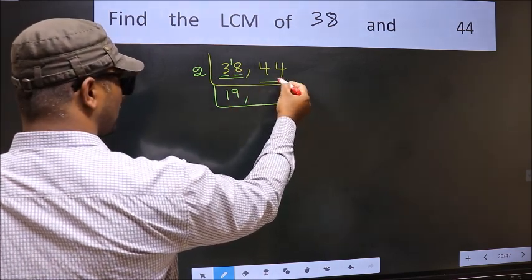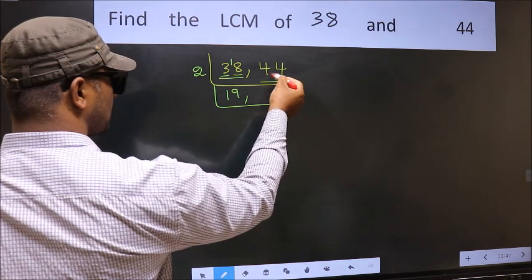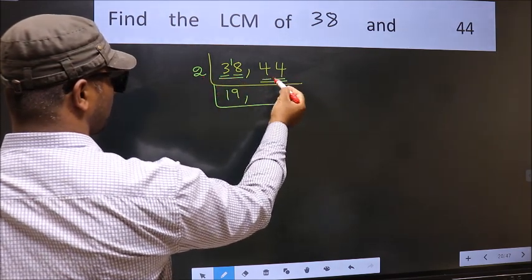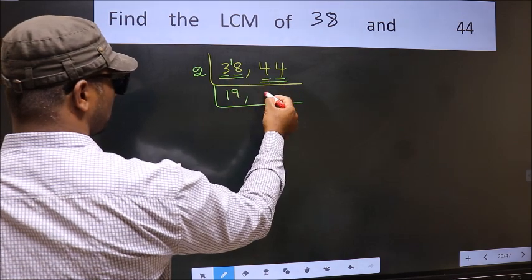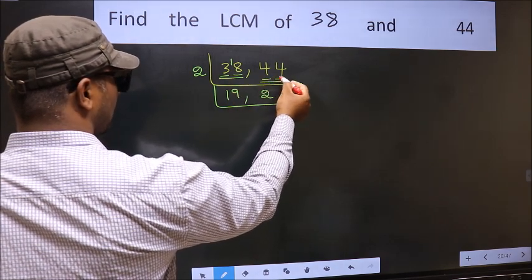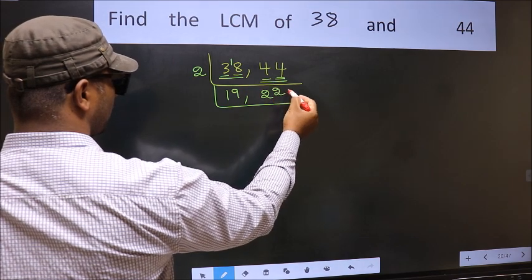The other number 44, last digit 4 is even, so this is divisible by 2. First number 4, when do we get 4 in 2 table? 2 times 2 is 4. The other number 4, when do we get 4 in 2 table? 2 times 2 is 4.